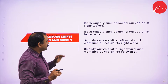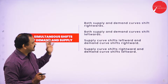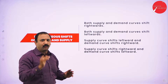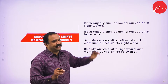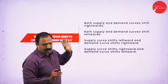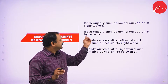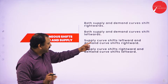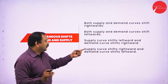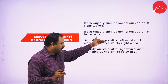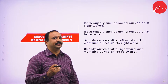Now we are going to talk about what happens when the simultaneous shifts of demand and supply happen. There are four factors to learn: both supply and demand curves shift rightwards; both shift leftwards; the supply curve shifts leftward while the demand curve shifts rightward; and finally, the supply curve shifts rightward while the demand curve shifts leftward.